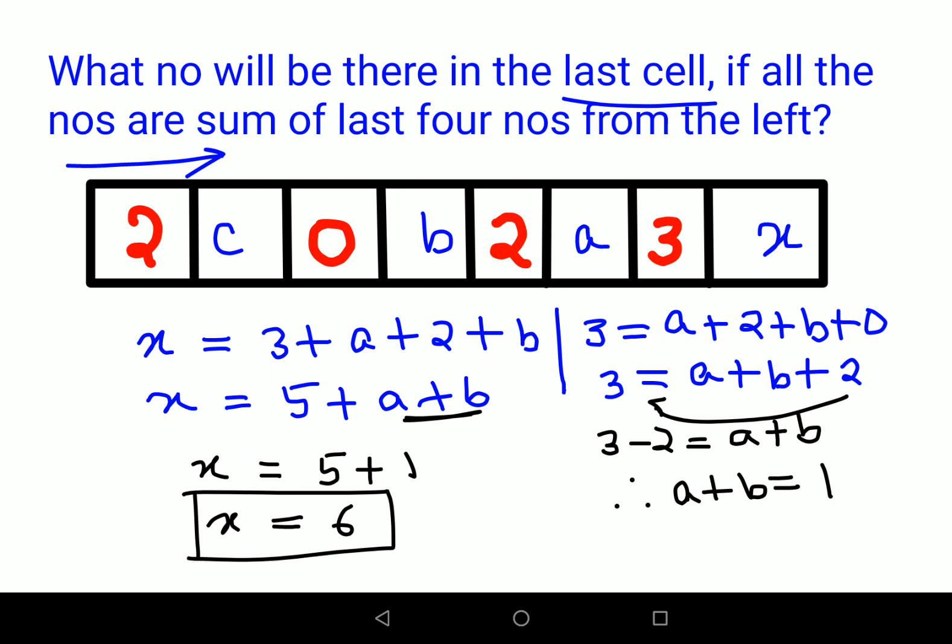So you saw how easily you could do this and you will realize that you don't even need to bother for the value of c because we don't know the last 4 numbers. We just know this random chain they have given us. So here we can say the answer for this kind of a puzzle is just 6.